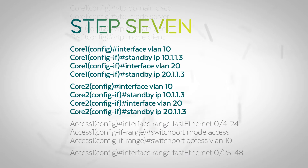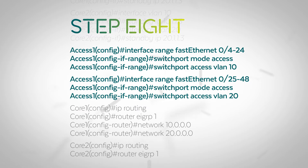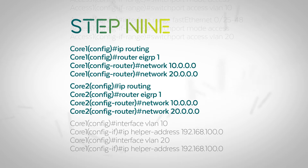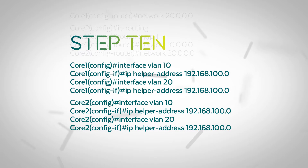Seventh, we will need to configure a first hop redundancy protocol on each of the core switches for each VLAN. Eighth, on each access switch, add the switch ports to the VLAN. Ninth, we will need to configure routing on each core switch to route between the VLANs. Finally, we will need to configure an IP helper address for DHCP in order for packets to reach the DHCP servers.